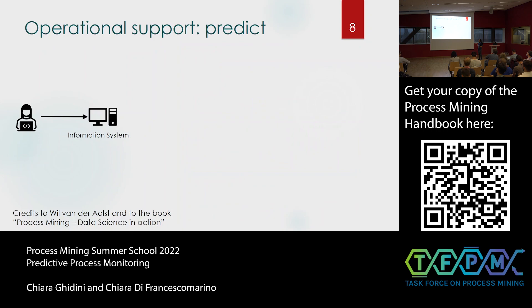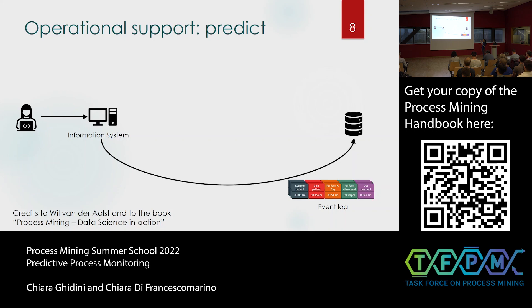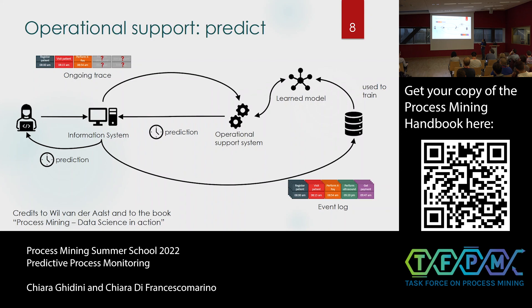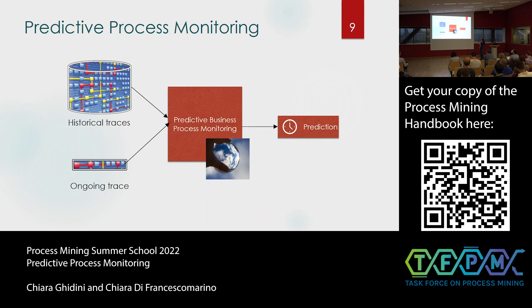What is prediction? Whenever we use information systems, we collect a lot of historical data that we can store. This historical data is used to train a model, and at runtime, when John's history is being executed, the operational support system can query that model to provide predictions about the future of John's execution and return these predictions to the user. Predictive process monitoring takes as input a set of historical traces — an event log — and an ongoing trace, and returns a prediction on the future of that ongoing trace.